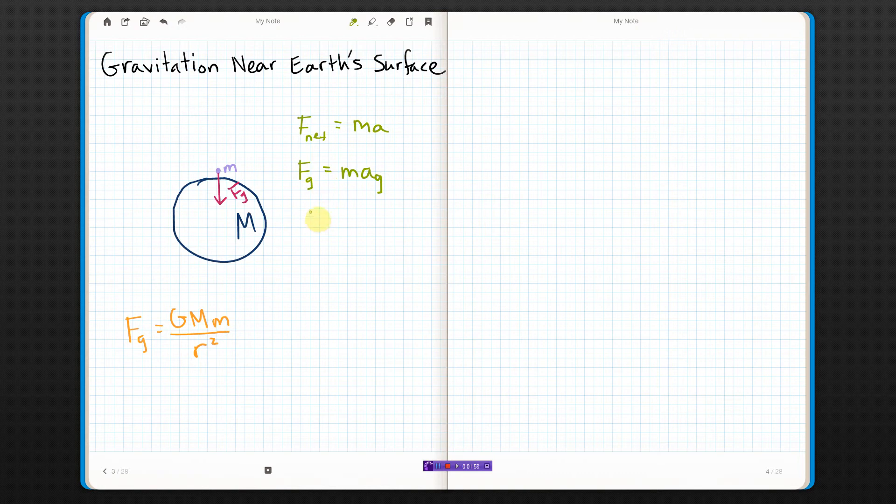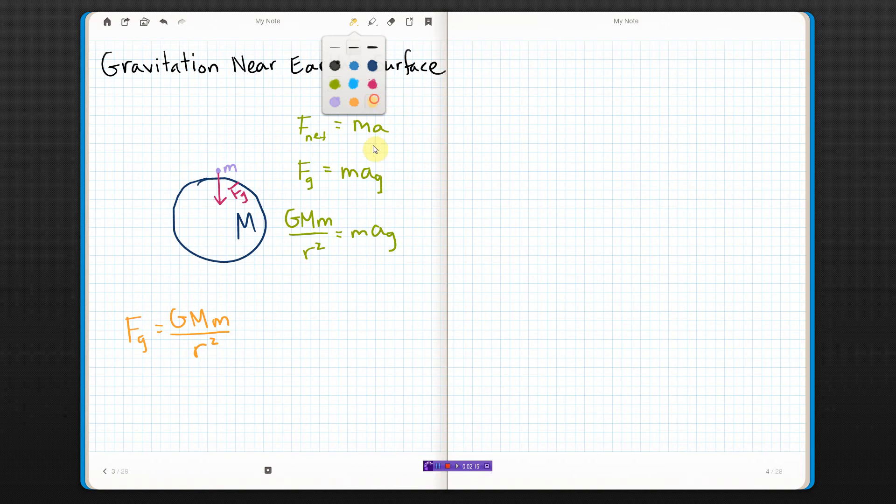We put in the force of gravity, so we've got big G times big M times little m over r squared equals little m times the acceleration of gravity. The little m's cancel, so the acceleration of gravity is big G times big M over r squared.